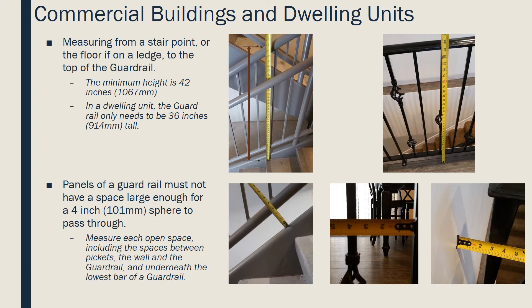Each panel of a guardrail must not have a space large enough for a 4-inch sphere to pass through. Measure each open space, including the spaces between pickets, between the wall and the guardrail, and underneath the lowest bar of a guardrail and either the floor or the stair. In the bottom three pictures, the spaces created by the guardrail are being checked: the left shows the space between the lowest bar of the guardrail and the stairway, the middle shows the space between pickets, and the right shows the space between the wall and the post of a guardrail.